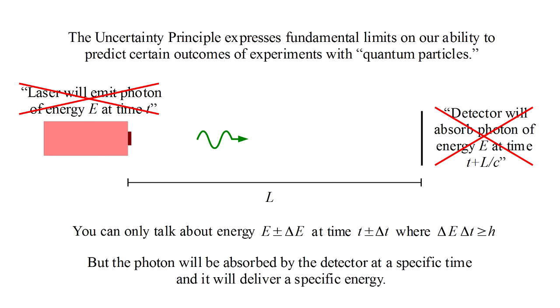After the photon is absorbed by the detector it ceases to exist and we can no longer talk about the energy of the photon in the present tense, only in retrospect. Still, this idea of going from uncertainty before an experimental outcome to certainty afterward may seem a bit weird.